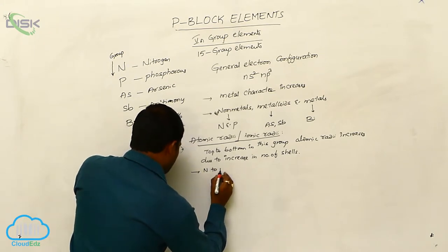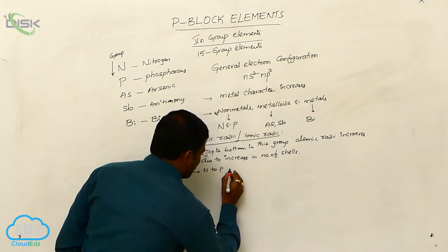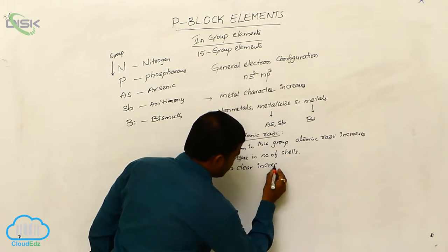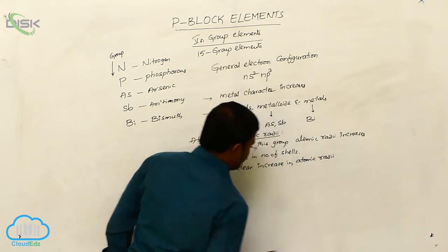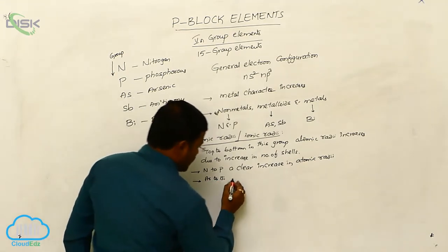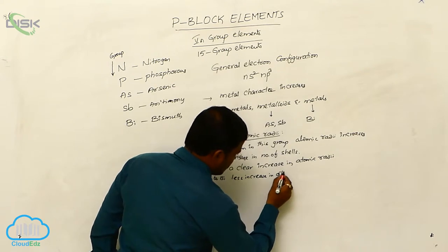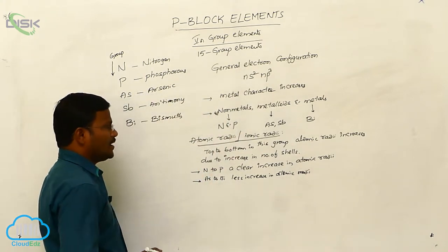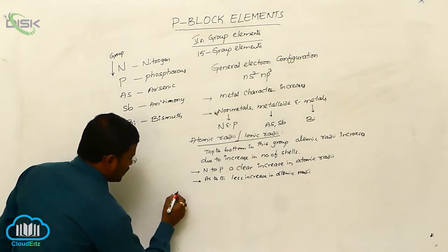From nitrogen to phosphorus there is a clear increase in atomic radii, whereas from arsenic to bismuth there is less increase in atomic radii. This is atomic radii or ionic radii as identified with the 15th group elements.